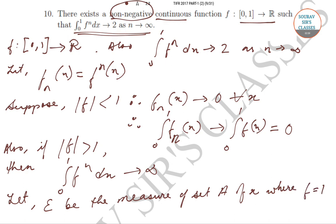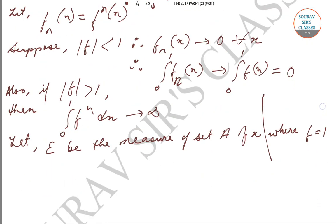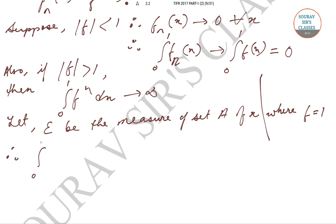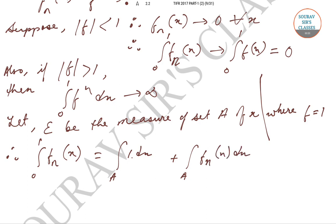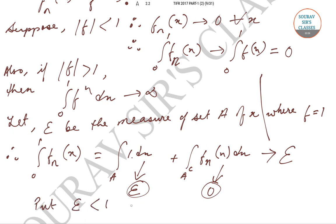Let epsilon be the measure of the set A = {x : f(x) = 1}. We check for f less than 1 and f equal to 1. Then we can write the integration from 0 to 1 of f^n(x) as the integration over the set A of f^n(x) plus the integration over the complement, which tends to epsilon + 0 = epsilon. So if we put epsilon less than 1, we find that the statement we have to check is false.